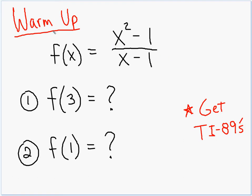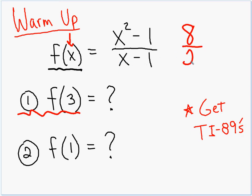Here first, I have a little warm-up question. We have our function f(x) = (x² - 1)/(x - 1), and I'm asking for a couple of values. What is f(3)? We plug in 3: 3 squared is 9, 9 minus 1 is 8, over 3 minus 1 is 2. 8 divided by 2 is 4. So f(3) is equal to 4.